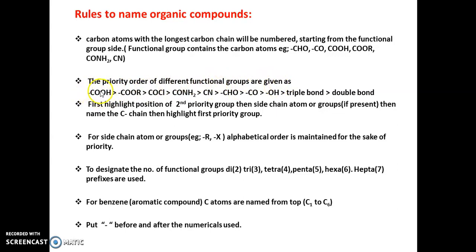The priority order of different functional groups is: COOH first, then COOR (ester), then COCl (acid chloride), then CONH2 (acid amide), then CN (cyano group), then aldehyde, then ketone, then hydroxyl, then triple bond, and then double bonds. This is the priority order of different functional groups.